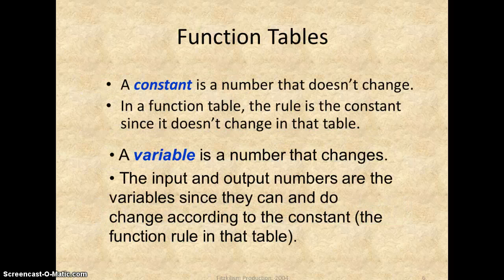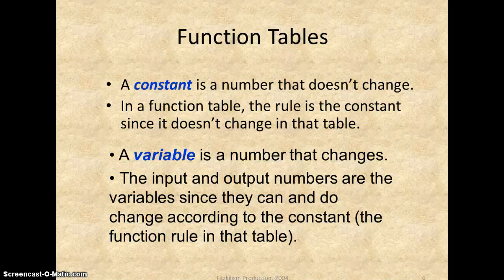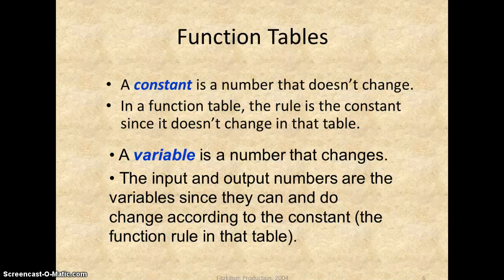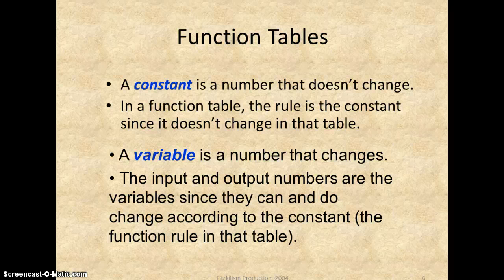The other couple words that you need to know: Constant doesn't change. So the function table, the rule that you come up with, will stay consistent throughout the whole table. The variable is what changes. So the input and output numbers are variables since you can change them accordingly to the constant in regards to the function.